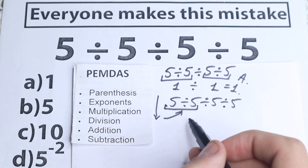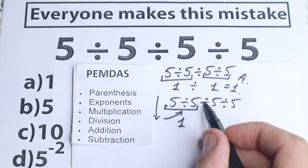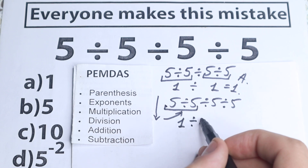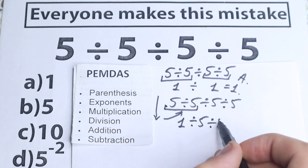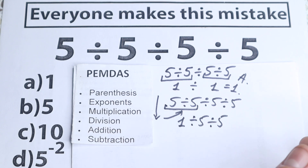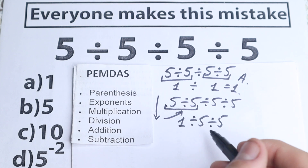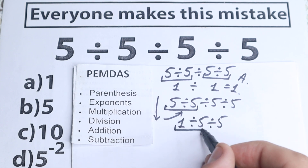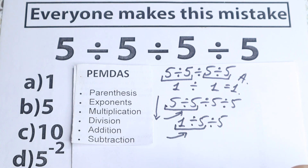5 divided by 5 equals 1. Now we rewrite the question: we have 1, divided by 5, and then divided by 5. We scan again for the first sign from left to right — it's this division sign right here, so we divide next.